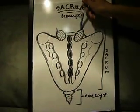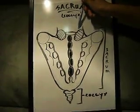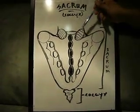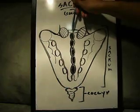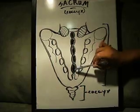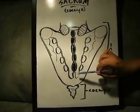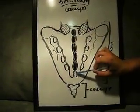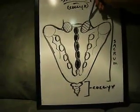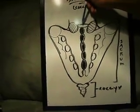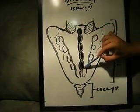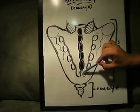Starting from the top, these two surfaces are called the superior articular surfaces. In between them is the sacral canal. The shaded portion is the medial sacral crest, and here at the bottom it's the sacral hiatus. So again, these are the superior articular facets, in the middle is the sacral canal, the shaded portion is the medial sacral crest, and at the very bottom it's the sacral hiatus.